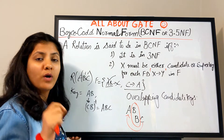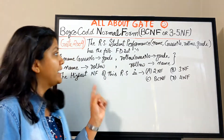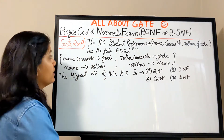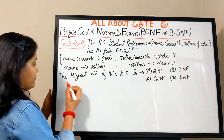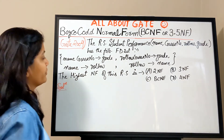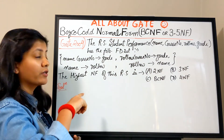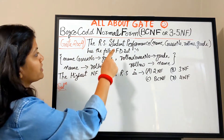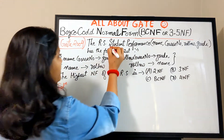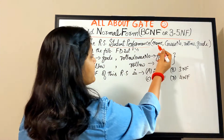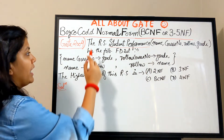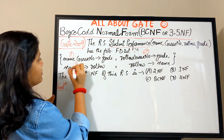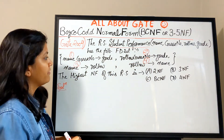Now let's solve a standard GATE 2004 question to understand BCNF more clearly. I would suggest you note the question on your paper, solve it yourself, and then come back for the solution. The relation schema is Student Performance, which has four attributes: Name, CourseNumber, RollNumber, and Grade.